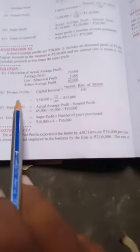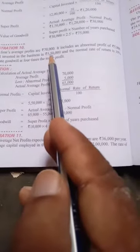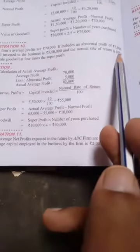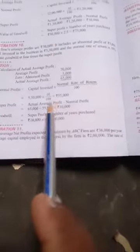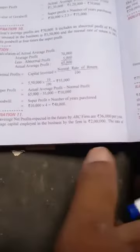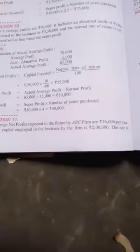Now normal profit which is 5,00,000 at 10% is 55,000. When our actual gain is 65,000, we have to calculate the goodwill super profit.